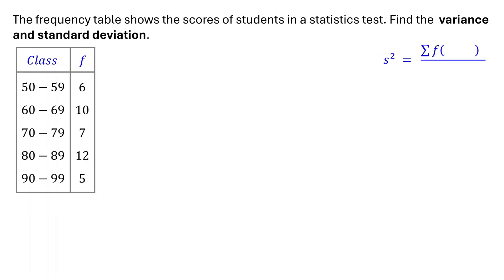The sample variance of grouped data is calculated using this formula. Here, s squared represents the sample variance. f is the frequency of each class. x is the midpoint of each class. x bar is the mean of the grouped data. The summation of f is the total frequency, that is the total number of students in the sample. The standard deviation is simply the square root of the variance. Here, s represents the sample standard deviation. So to find the standard deviation, first calculate the variance and then take its square root.